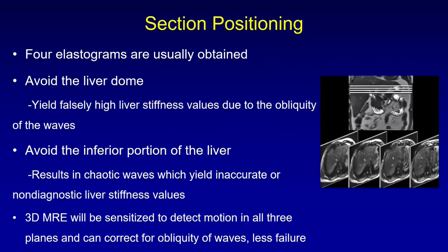With the passive driver in position, 4 elastograms are obtained. We avoid the liver dome, as it yields falsely high liver stiffness values due to the obliquity of waves. We also avoid the inferior portion of the liver, as it results in chaotic waves yielding inaccurate or non-diagnostic stiffness values. At present we have access to only 2D MRE; 3D MRE is an evolution that will be sensitized to detect motion in all three planes, correct for wave obliquity, and potentially allow free-breathing acquisition.